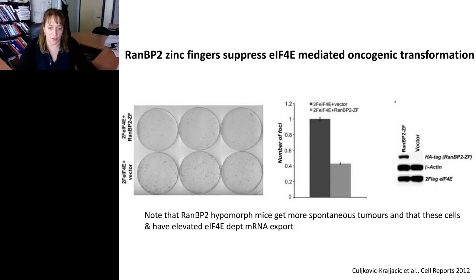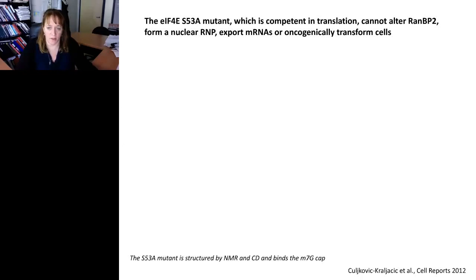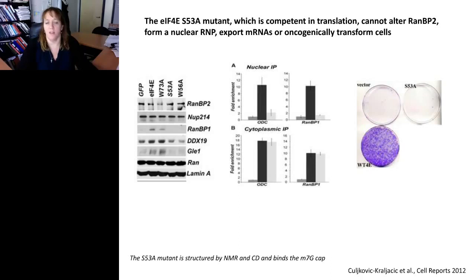I should also note that RAN-BP2 hypomorph mice get spontaneous tumors more readily than controls, consistent with what we're saying here, whereas overexpression would suppress this. Continuing on this vein, we found a 4E mutant, S53A, that acts in translation but does not alter RAN-BP2, cannot form a nuclear RNP, cannot export RNAs, and cannot transform cells.